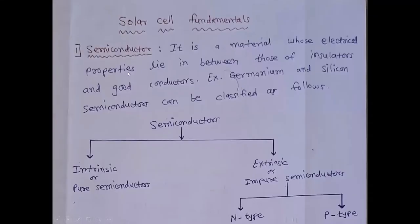So friends, what is semiconductor? Now semiconductor is a material whose electrical properties lie in between those of insulators and good conductors. Example is germanium and silicon.